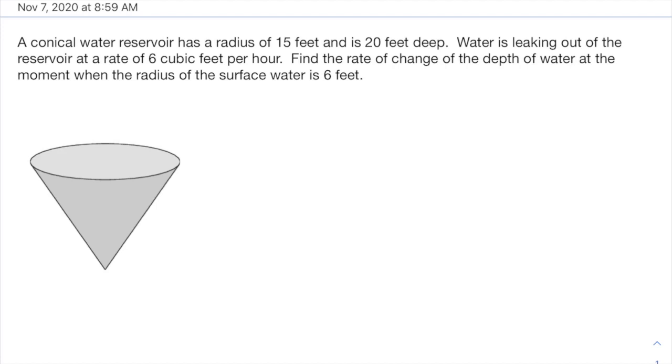And this one, we have a conical water reservoir, has a radius of 15 feet and is 20 feet deep. Water is leaking out of the reservoir at a rate of six cubic feet per hour. Find the rate of change of the depth of water at the moment when the radius of the surface water is six feet.